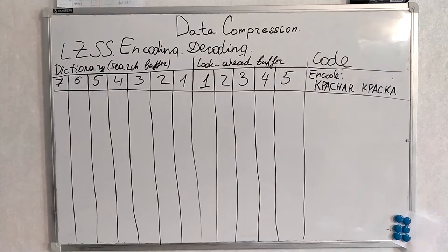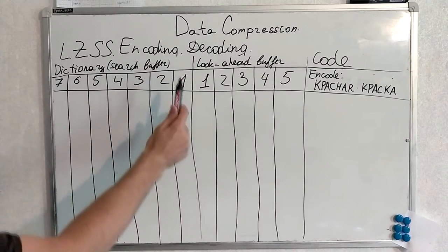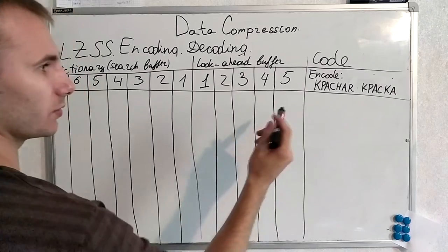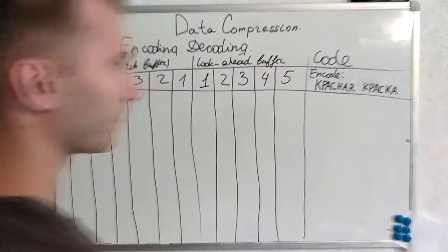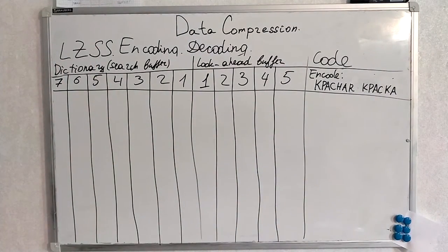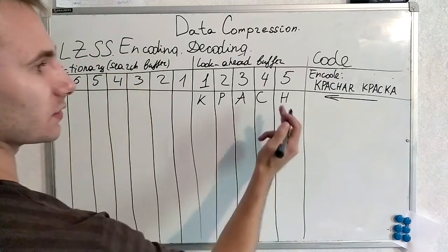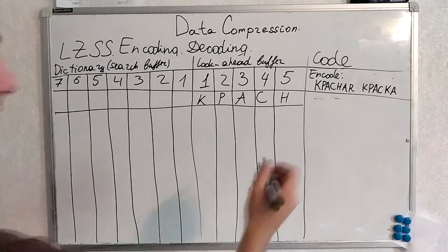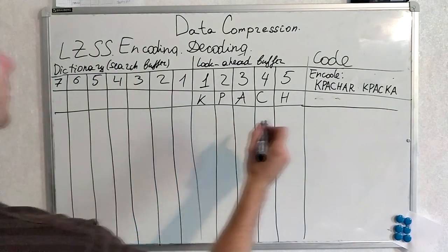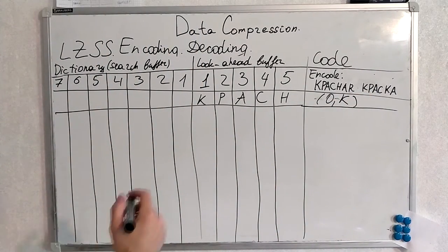Now comes the example. Here's the table we are going to use for our algorithm. Here's the dictionary, lookahead buffer and the code. We are going to encode this weirdly looking phrase. First step will be we just fill in our lookahead buffer because the word is moving in this direction. The dictionary is empty yet. Thus, we encode this symbol with 0K according to our steps. We move one symbol forward.